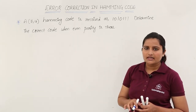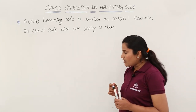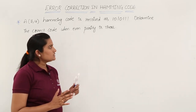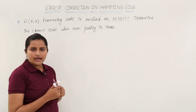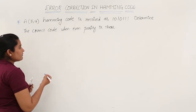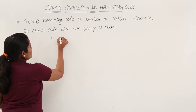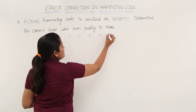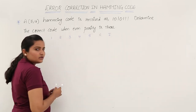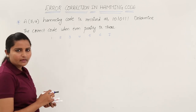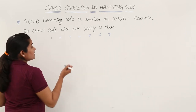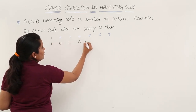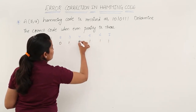Then only you are going to correct that single bit error. For error detection, you need to place your code under position values. Since this is a 7-bit code, the bit numbers are 1, 2, 3, 4, 5, 6, 7. The given bits are 1, 0, 1, 0, 1, 1, 1 placed under these positions.